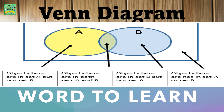Objects here are in set A but not set B. Objects here are in both set A and B. Objects here are in set B but not set A. Objects here are not in set A or set B.